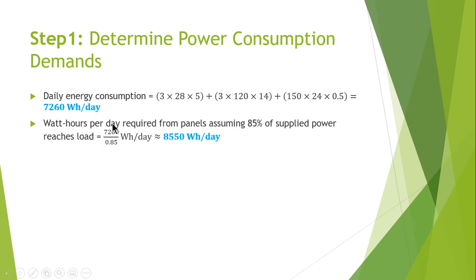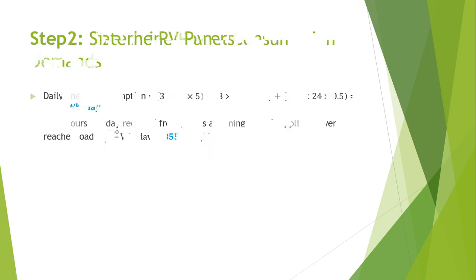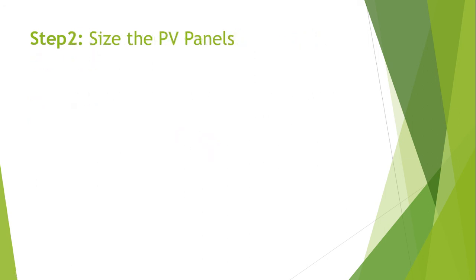The watt-hours per day required from the panel, assuming 85% of total supplied power reaches the load, is calculated by dividing the daily energy consumption by 0.85, giving us 8,550 watt-hours per day.